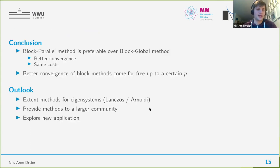I conclude here by writing down the things I've just mentioned. The block parallel method is preferable over the block global method because we have better convergence with the same costs. Better convergence of the block methods came for free up to this certain p where it starts increasing the costs. As an outlook, I want to extend these computations for eigensystems. I want to provide these methods for a larger community. I'm working on a merge request for the dune software framework currently. And finally, I'm always looking for new applications. If you have an application in mind, I would be very happy to come in touch with you. I'm looking forward to your questions.